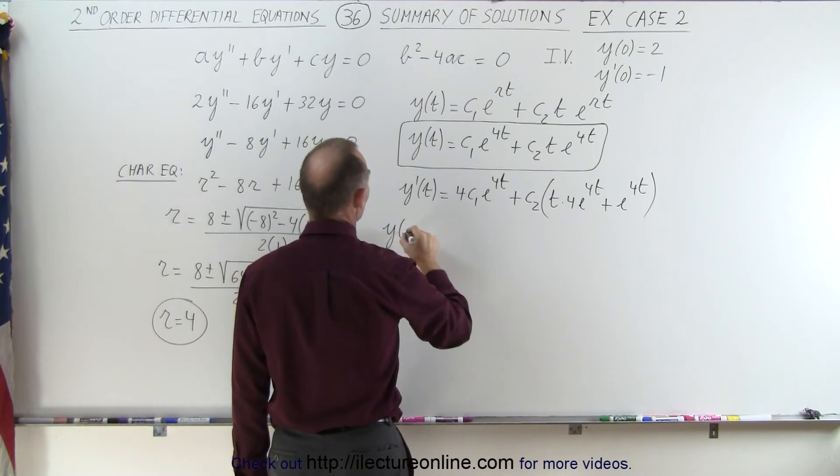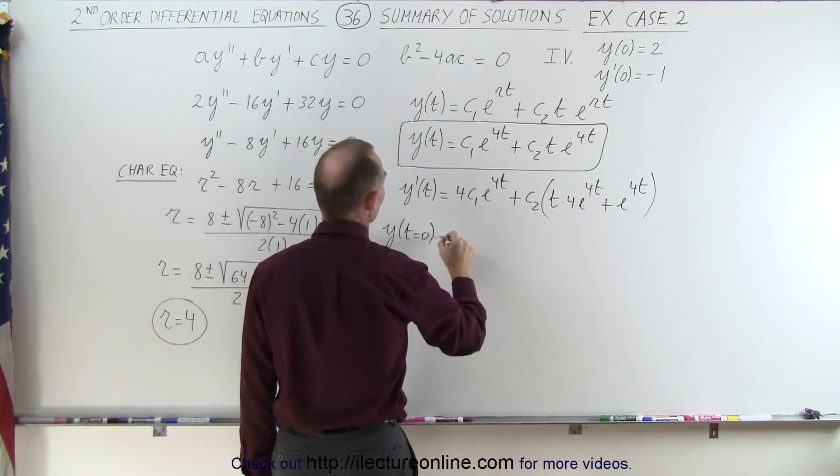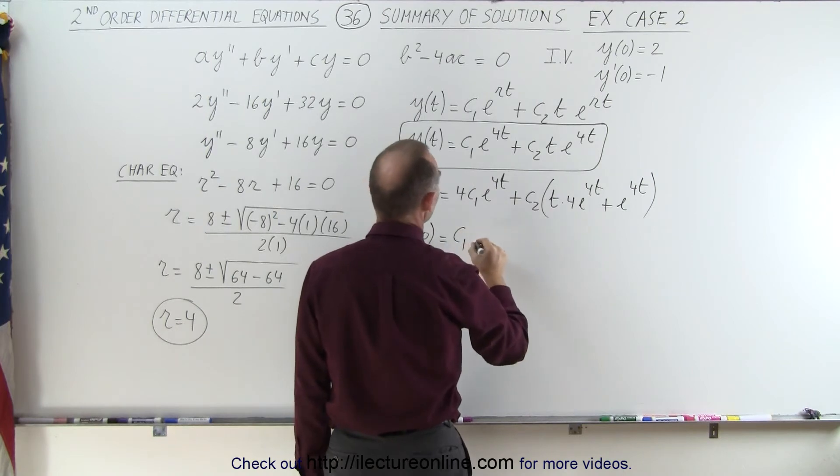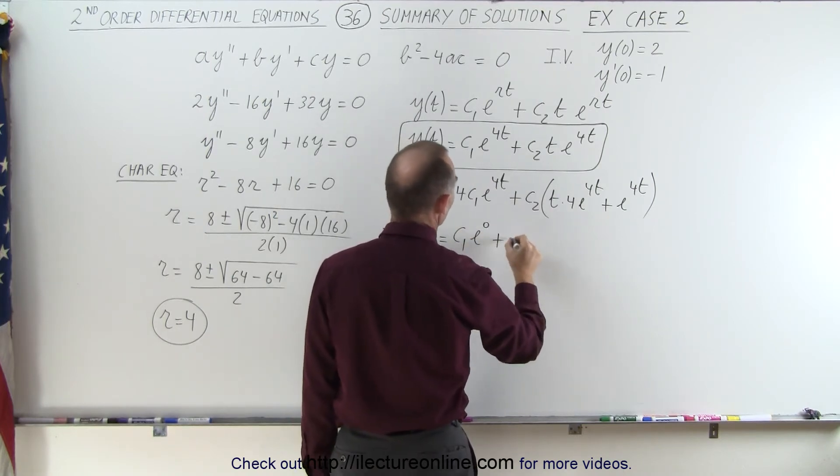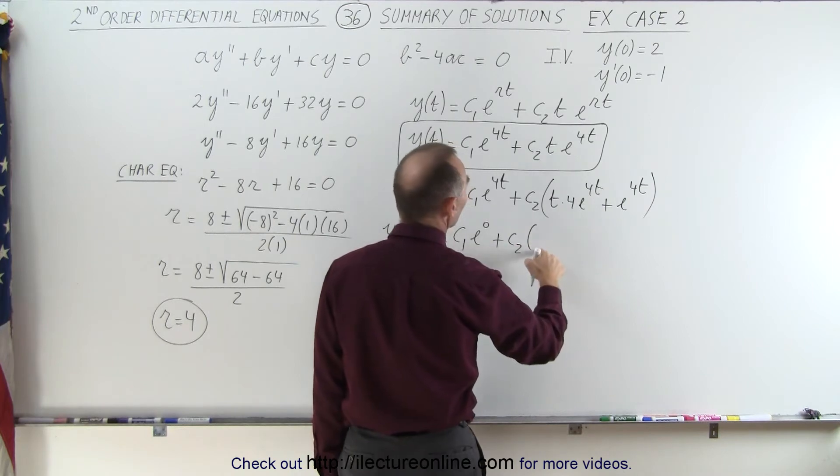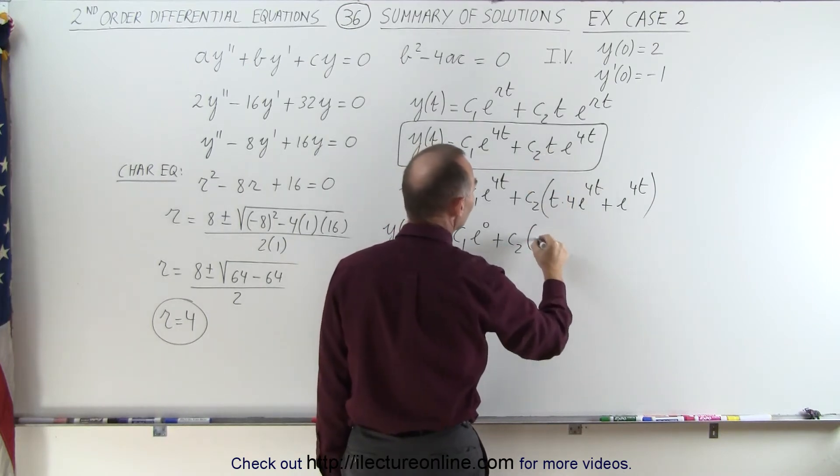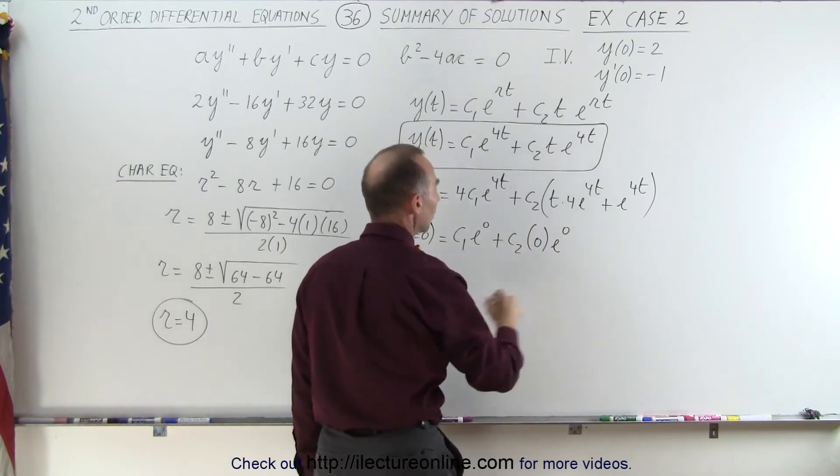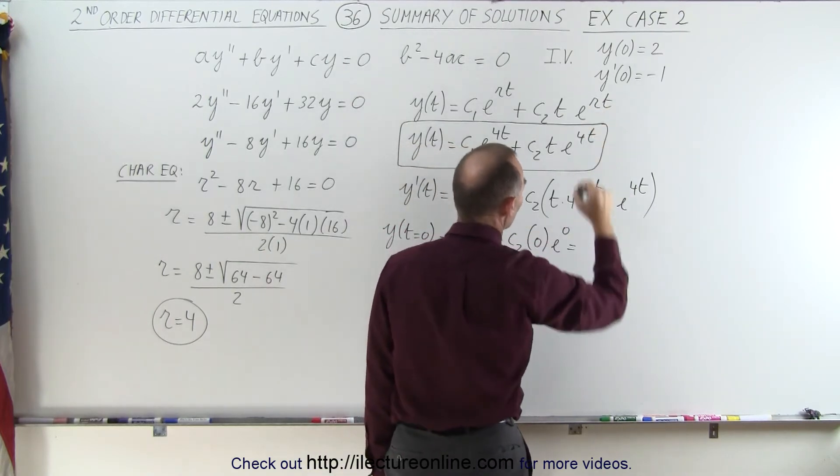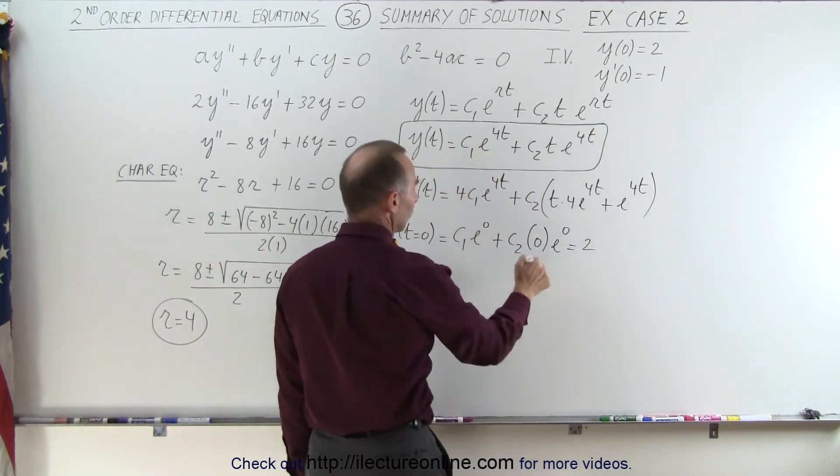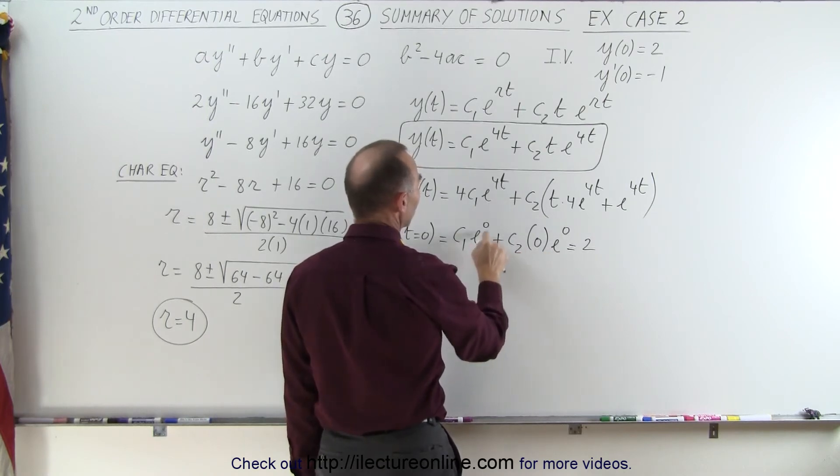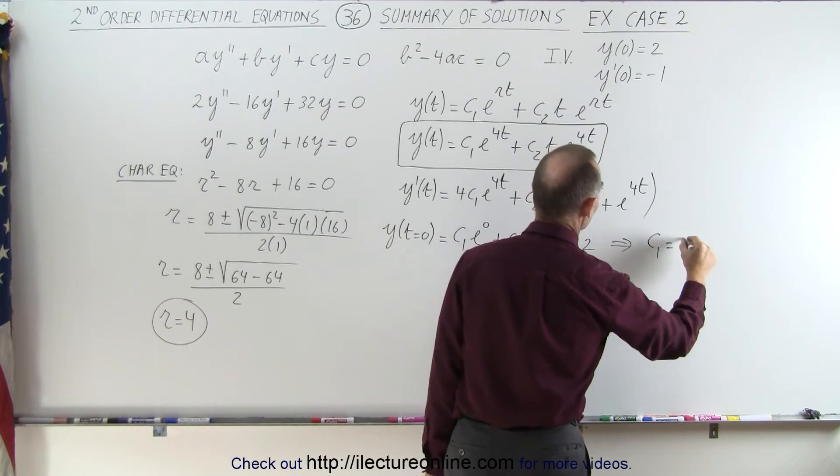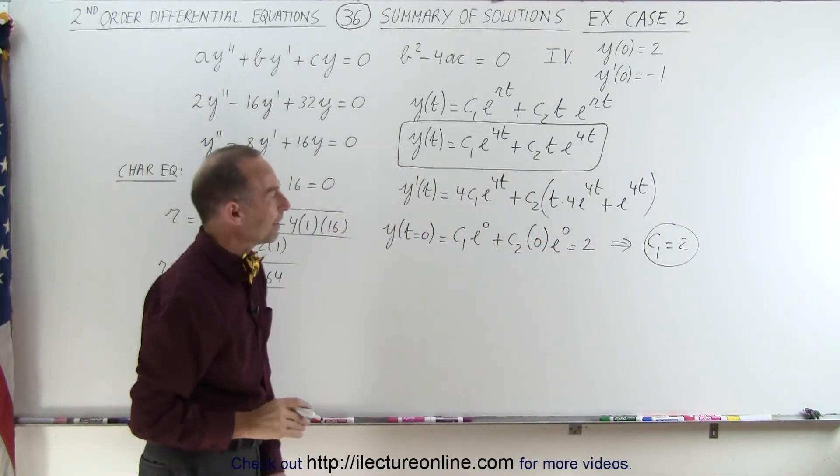So y when t is equal to 0 is equal to, over here we have c1 e to the 0 plus c2 times, but since there's a t there, it will be 0 times e to the 0, which means this whole term will go to 0, and that is equal to 2. Since this goes to 0 and e to the 0 is 1, this then concludes that c1 is equal to 2. That was rather easy.